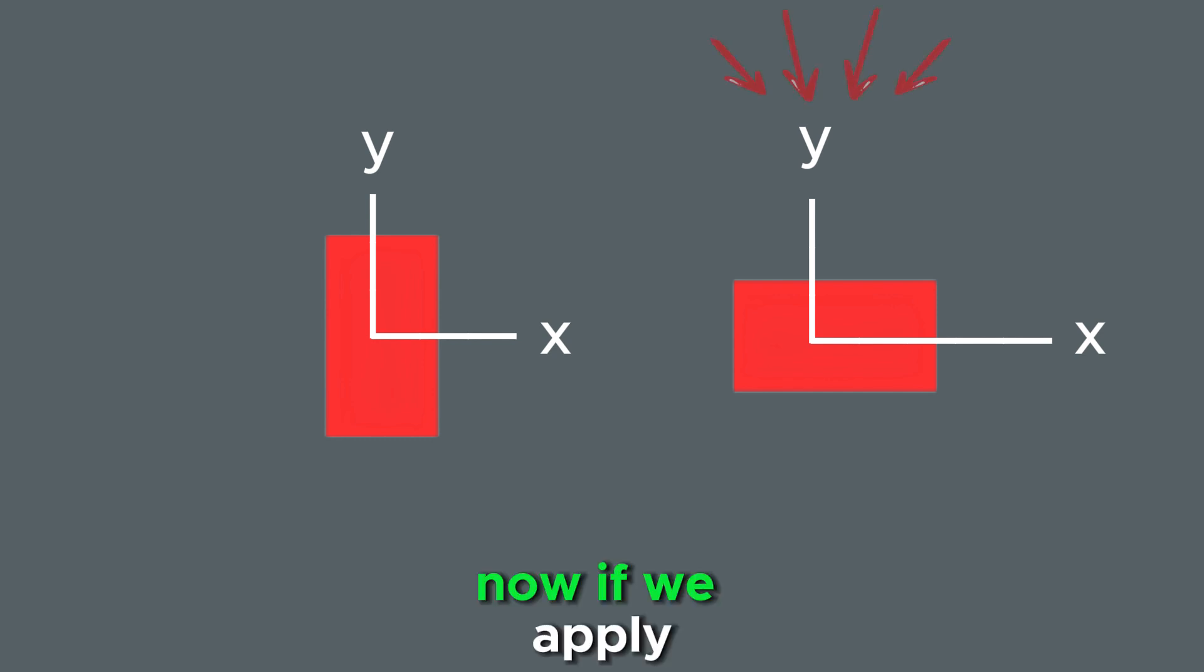Now if we apply this principle to the second shape, we see that the mass distribution is different. And as a result, this shape offers less resistance to rotation.